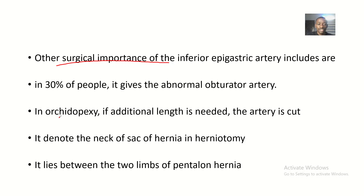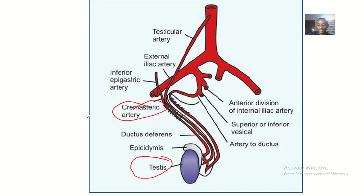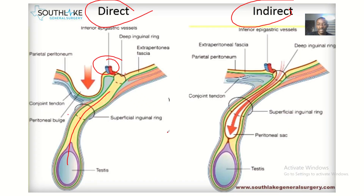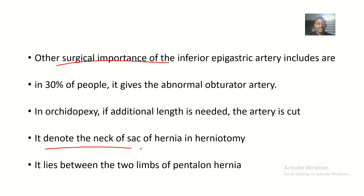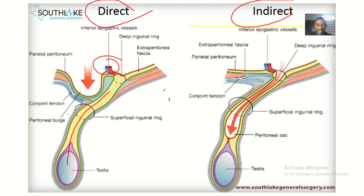In orchidopexy, if additional length is needed, the artery is cut. Orchidopexy is a surgery performed when the testes has not descended into the scrotum. To allow the testes to descend into the scrotum, they have to cut the inferior epigastric vessels.